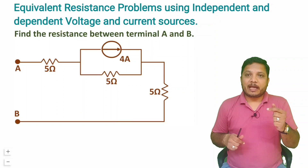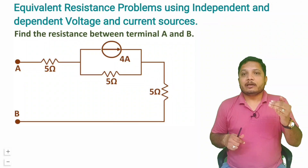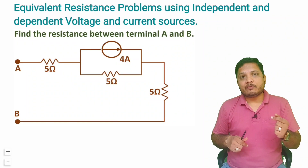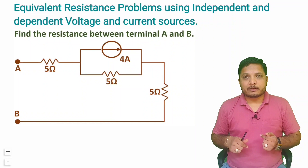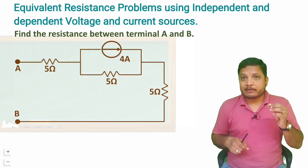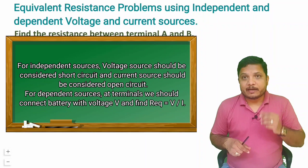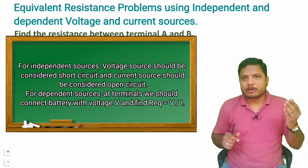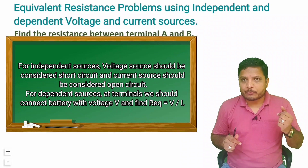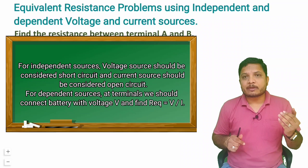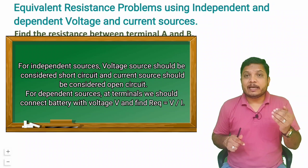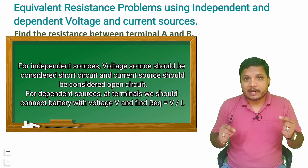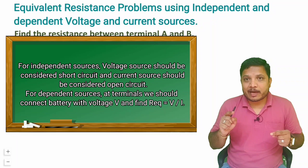Let me explain what will happen with independent sources when you are asked to find equivalent resistance. Independent sources means a voltage source with a fixed value like 5V or 10V, or a current source with a fixed value like 1A or 5A. Its value is constant. So if that is connected in a circuit and you are asked to find the equivalent resistance,